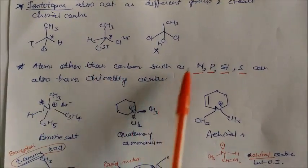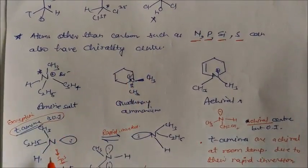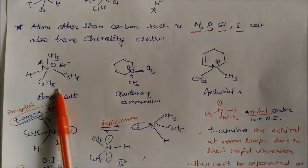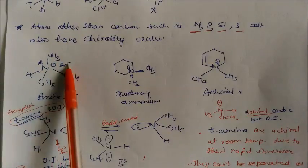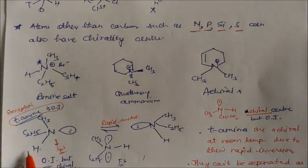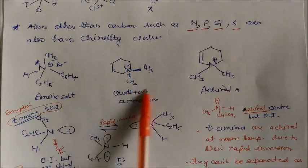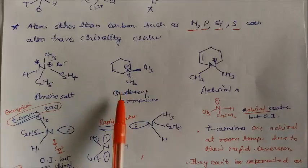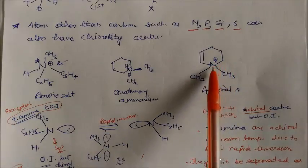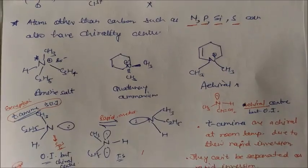Atoms other than carbon — such as nitrogen, phosphorus, silicon, and sulfur — can also have a chirality center. In this case, if you see carefully, this is an amine salt. This nitrogen has four different groups, and this is a salt with a positive and negative charge. So this nitrogen has a chiral center. Even in this cyclic example, this is a quaternary ammonium salt — again, this nitrogen is the chiral center. But this amine is achiral because two same methyl groups are present, so this amine is achiral due to the presence of two identical groups.